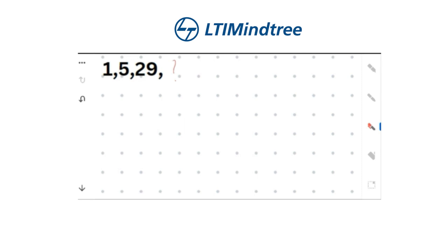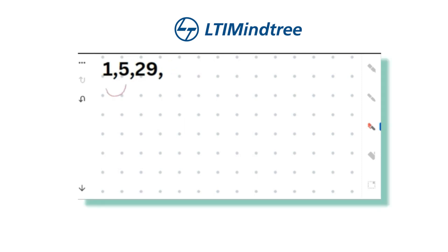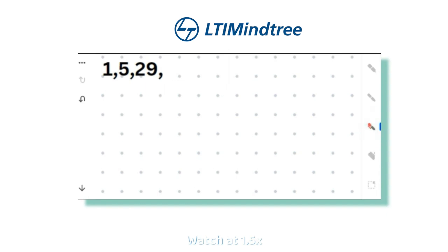Let's see the first question from MindTree: 1, 5, 29. If we check the difference pattern, 5 minus 1 is 4, and 29 minus 5 is 24 — that's not a consistent pattern. Let's check the prime pattern: 1, 5, 29 — these are primes, but the series is not following a prime pattern either.